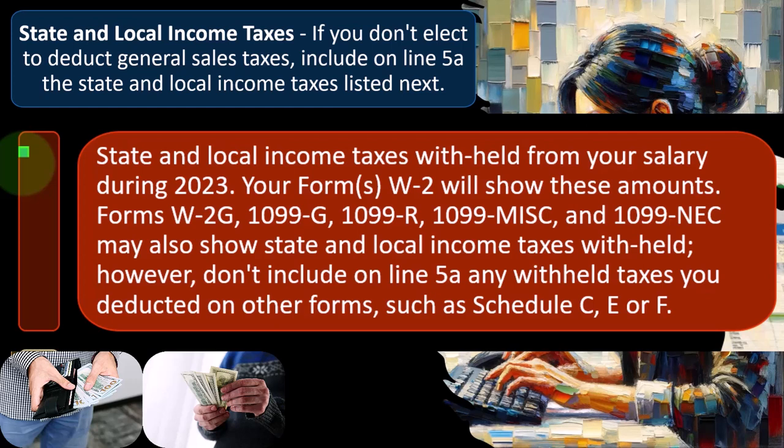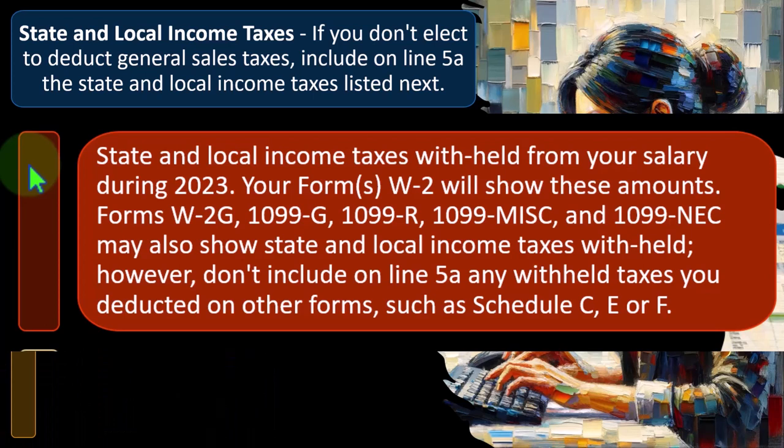For most people, we pay state taxes through withholdings, so the data input into software should be fairly straightforward for most tax returns because the W-2 will have the withholdings, helping us calculate the deductibility on a cash-based system. But some people might have estimated tax payments, in which case you've got to make sure you put in those estimated tax payments, like for a business situation. The sales tax complicates things because there's no withholding system set up, and you'll have to use some other method to calculate the sales tax.